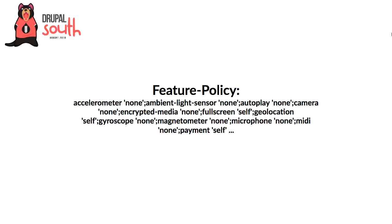The next one is feature policy — this is about the things you can use on the device when the page loads. You can turn off the accelerometer, turn off geolocation, say you can't use the microphone. So if some kind of incident happened — like an XSS issue where someone injected code — the security headers for the browser would have totally disabled those features. If you're not using these things, it's great to send a header to switch them off and pretend they don't exist for your website.